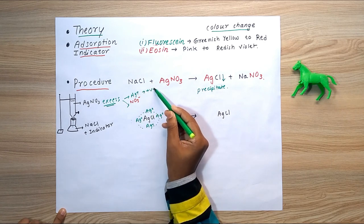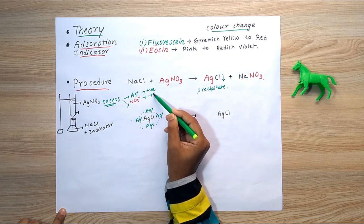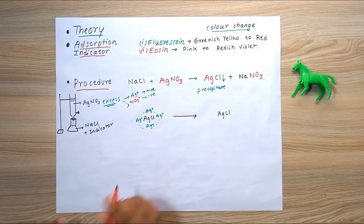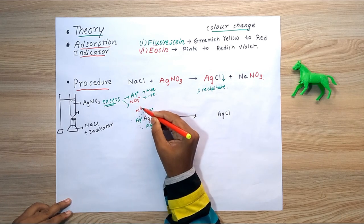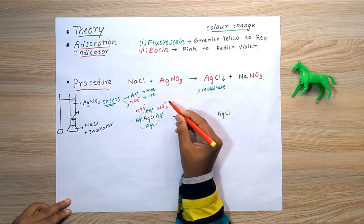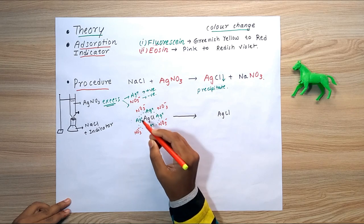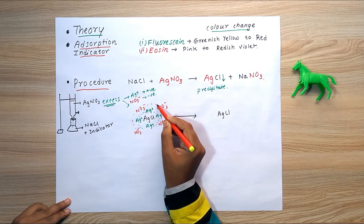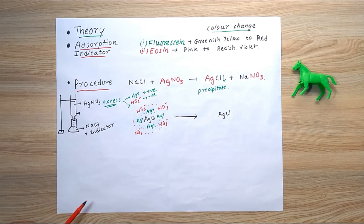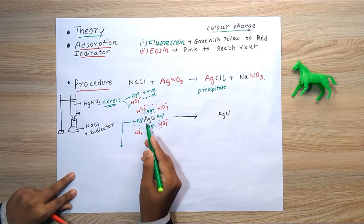Since Ag+ is positive and NO3- is negative, the positive Ag+ primary layer attracts the nitrate ion (NO3-). This negatively charged nitrate ion sits on top of the Ag+ layer and forms the secondary adsorption layer. So two layers are formed after the formation of the precipitate.